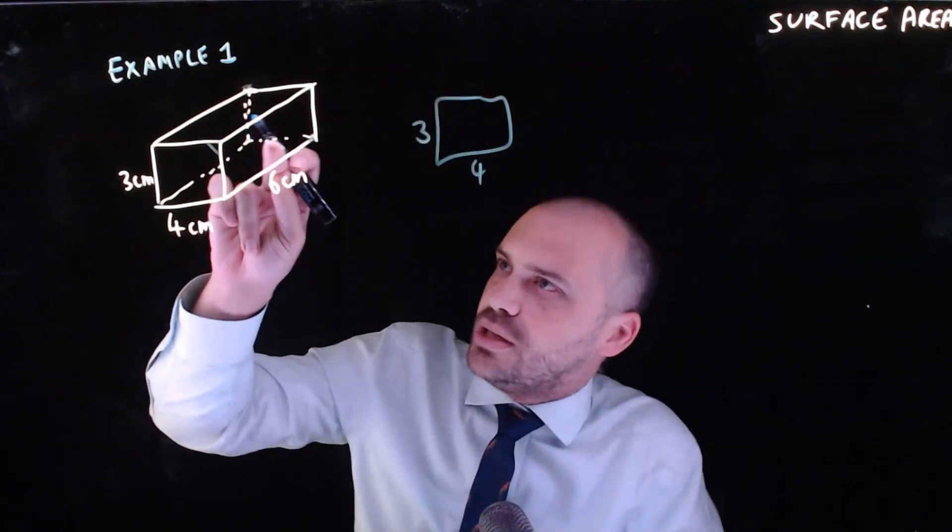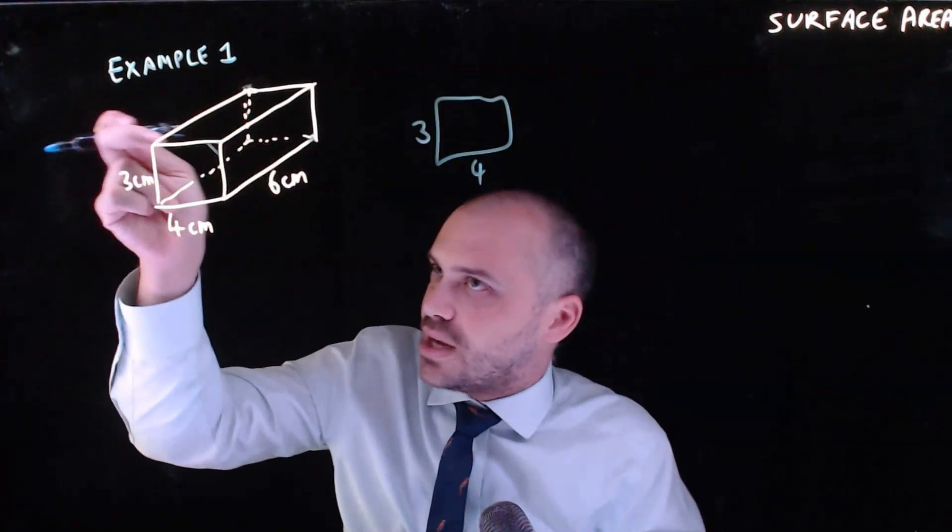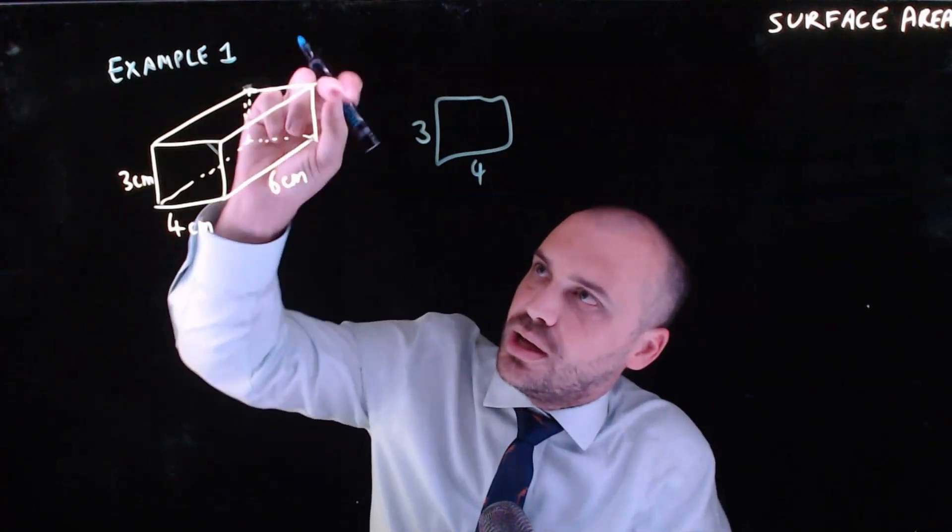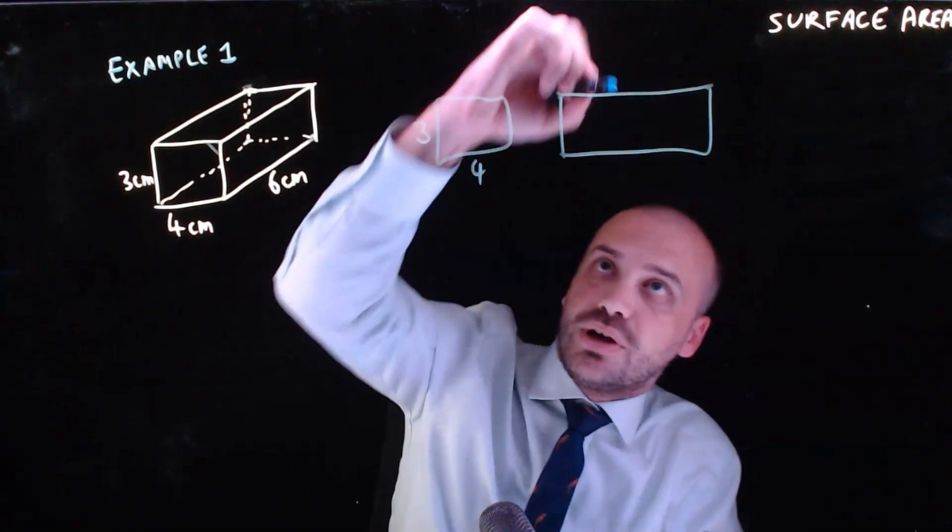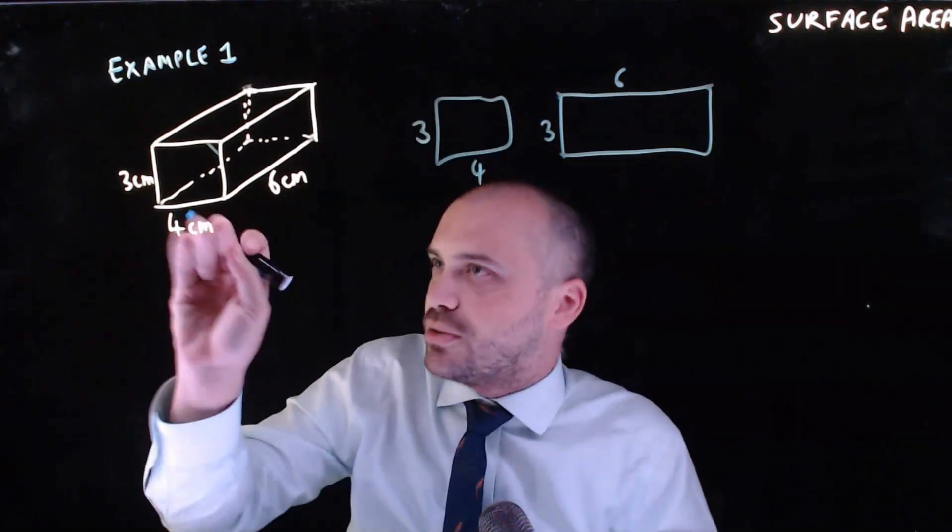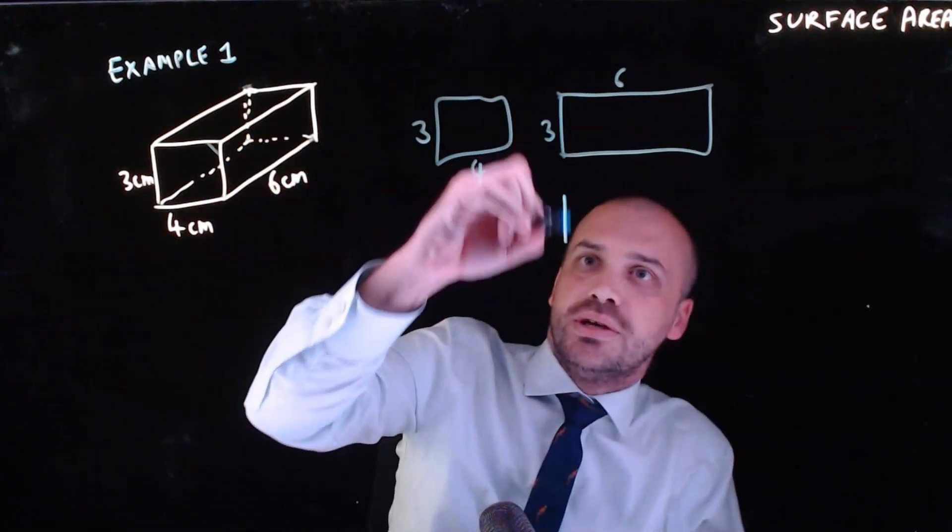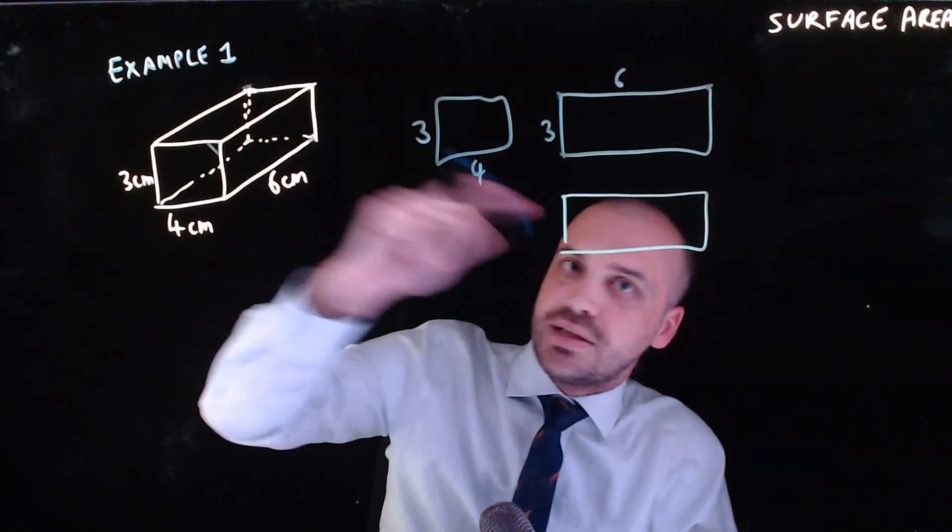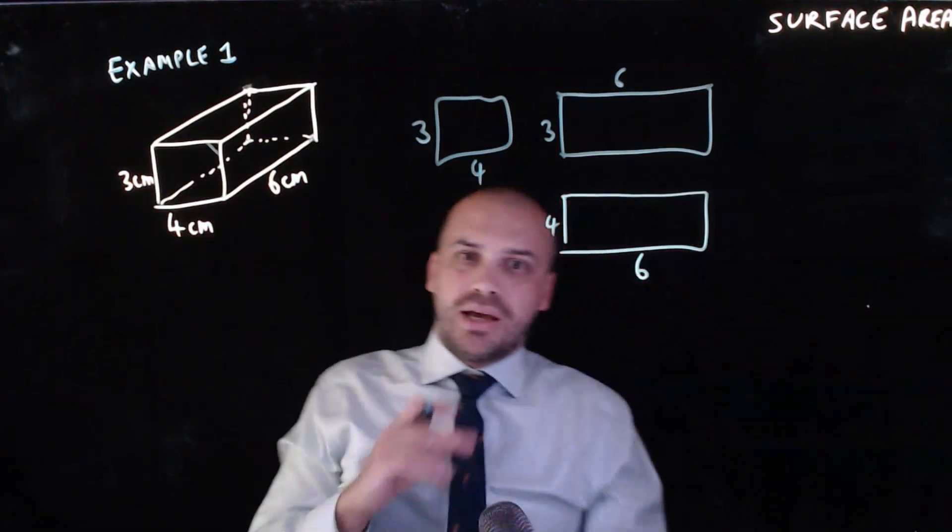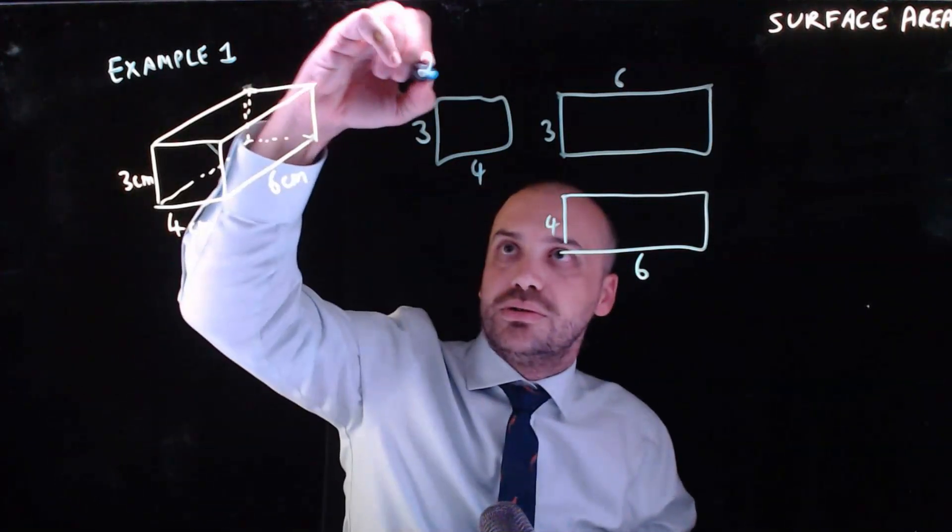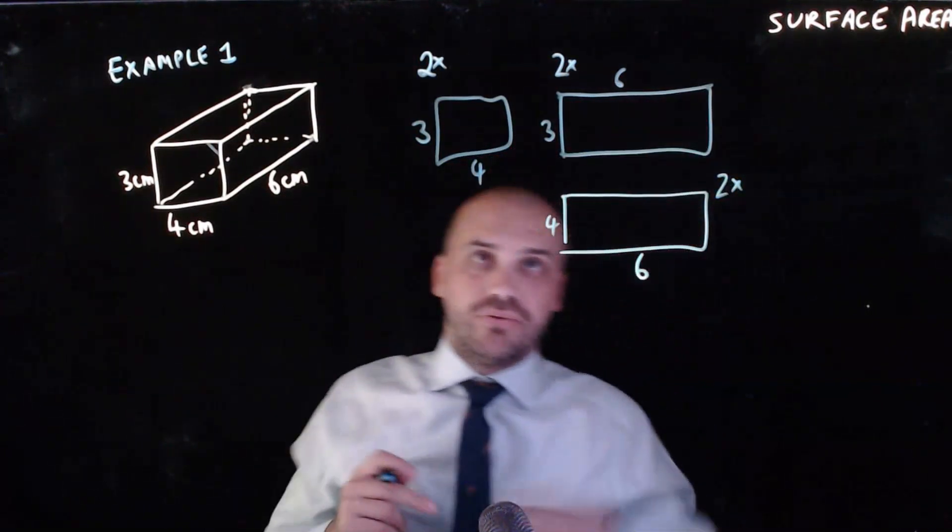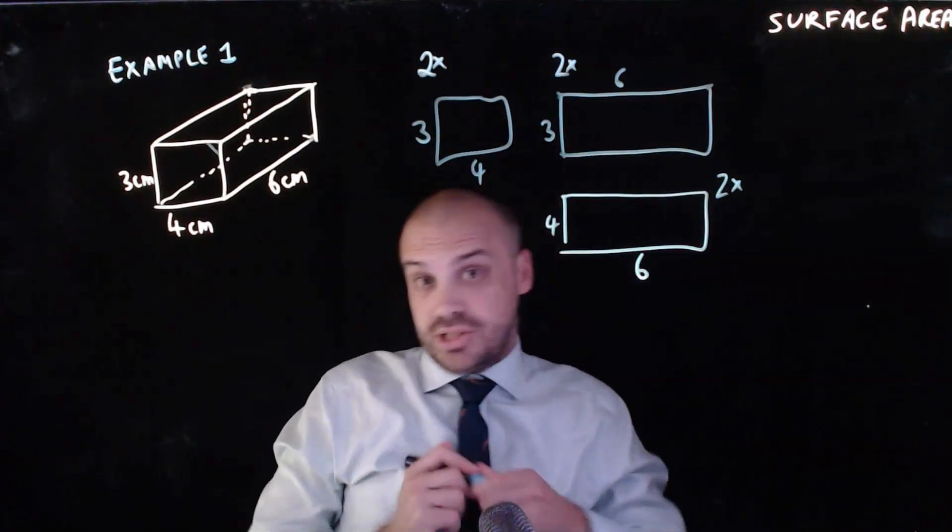I would need this surface and then this other surface on the other side, and those surfaces are 6 centimeters long and 3 centimeters high. So I'll draw that one in as well, 6 centimeters and 3 centimeters. And finally I would need the bottom surface and the top surface which is 6 centimeters long and 4 centimeters. So I need two of those, I need two of those, and I need two of those. I've got six surfaces all together.